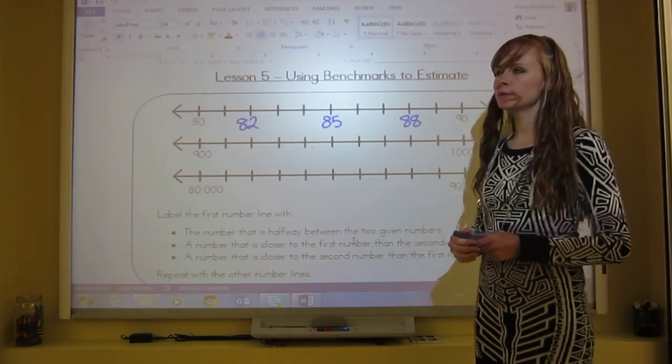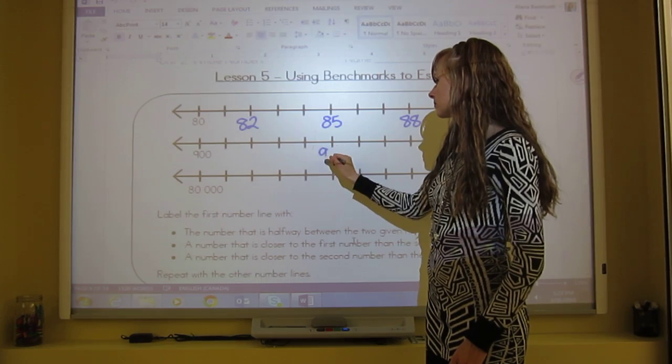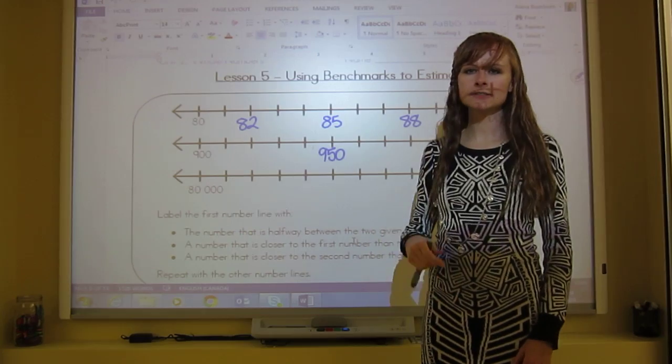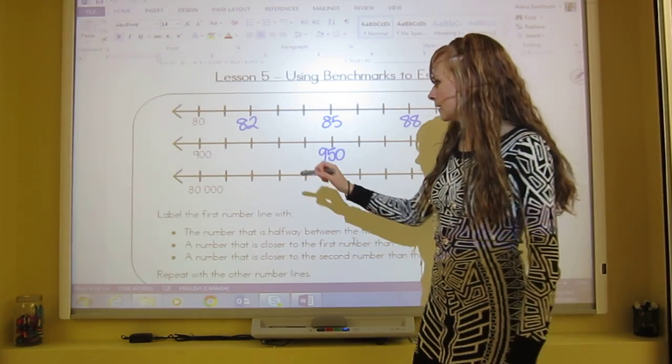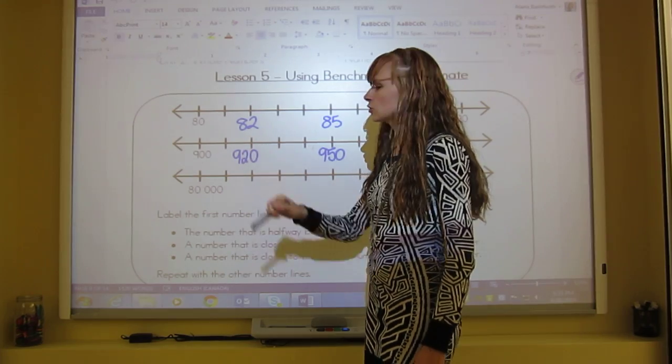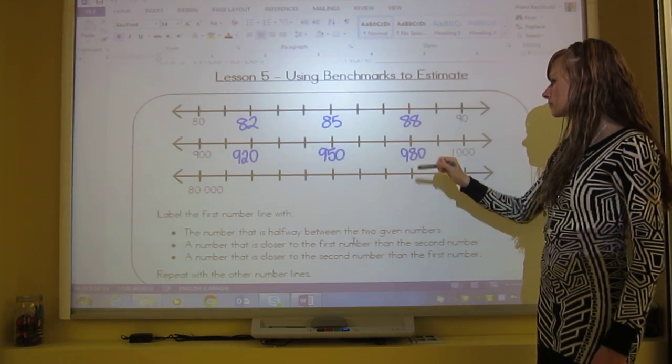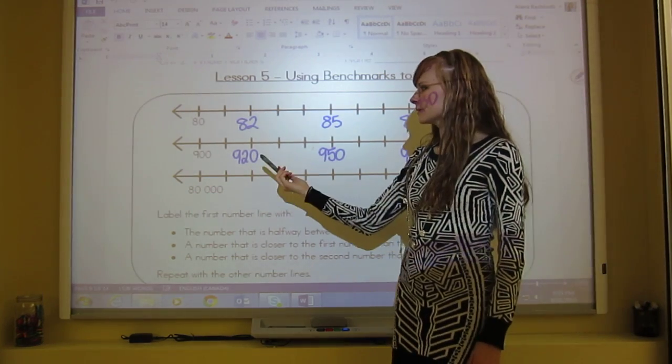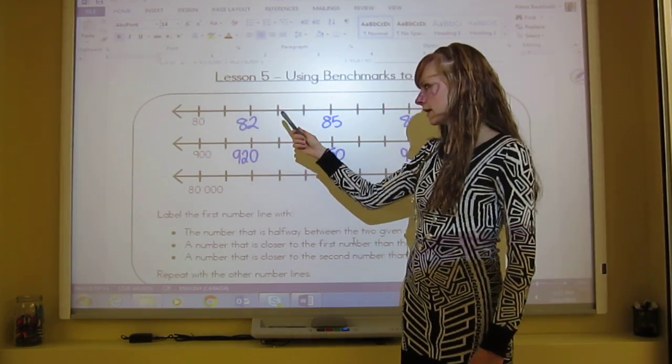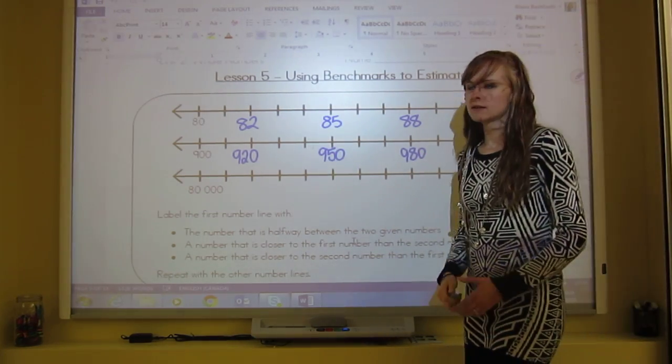And then the next one, what's halfway between 900 and 1000 is 950. A number that's closer to 900 than it is to 1000, we could pick 920. And over here we could pick 980. So this one would be skip counting by tens: 900, 910, 920, 930, 940, 950, 960, 970, 980, 990, 1000.